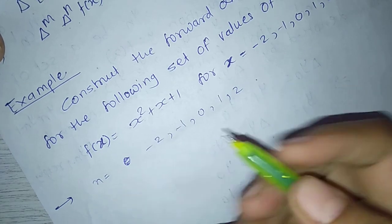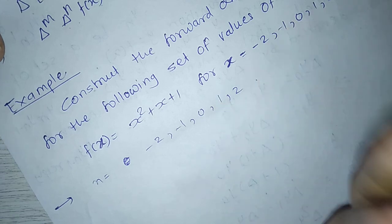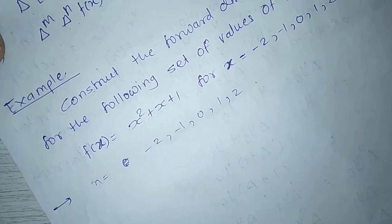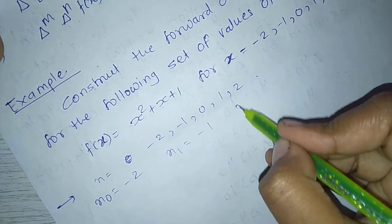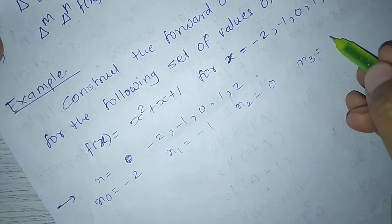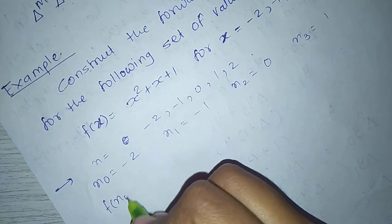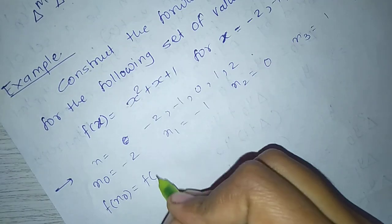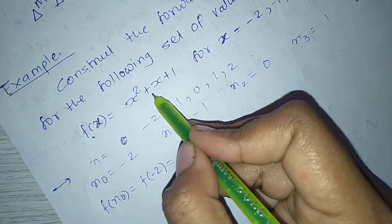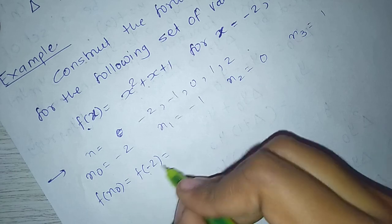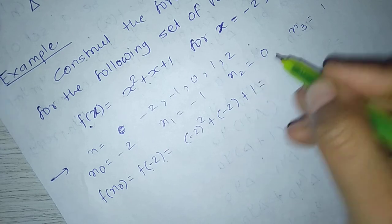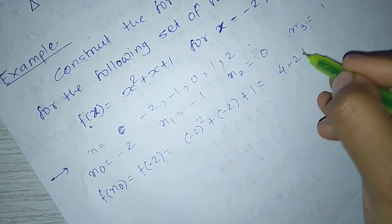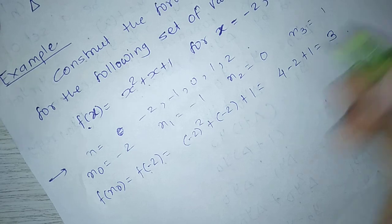So the values of y₀, y₁, y₂, y₃, y₄ we have to calculate. Here x₀ = -2, x₁ = -1, x₂ = 0, x₃ = 1, x₄ = 2. f(x₀) means f(-2): f(x) = x² + x + 1, so f(-2) = (-2)² + (-2) + 1 = 4 - 2 + 1 = 3.